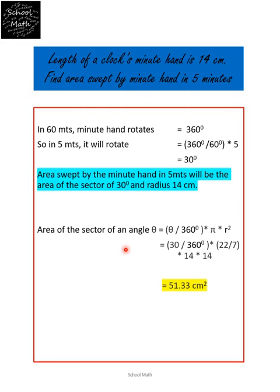Area of the sector of an angle theta is theta by 360 degrees into pi r square. Substitute the value of theta as 30 and radius as 14. We will get 51.33 cm square as the area swept by the minute hand in 5 minutes.